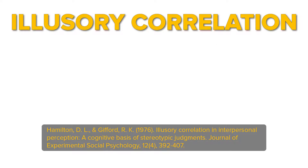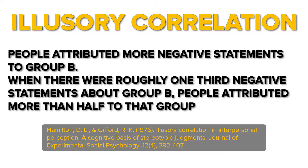They expected that people would have illusory correlation between minority group B and undesirable statements. After exposure to as few as 13 to 26 statements about each group, participants indeed showed illusory correlation between undesirable behavior and the minority group. For example, people attributed more negative statements to group B — when there was roughly one third negative statements about group B, people attributed more than half to that group. Illusory correlation resulted in differential perception of two groups they didn't know prior to the experiment and had only 13 or 26 statements about.